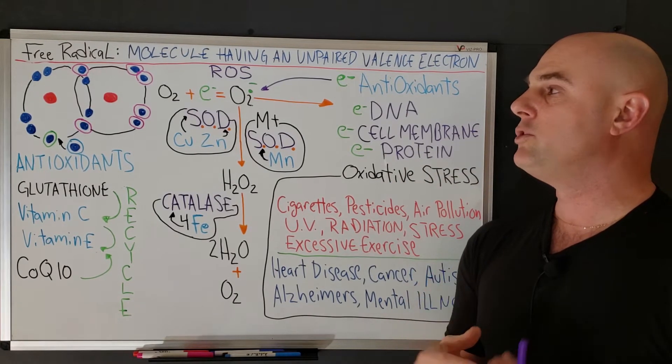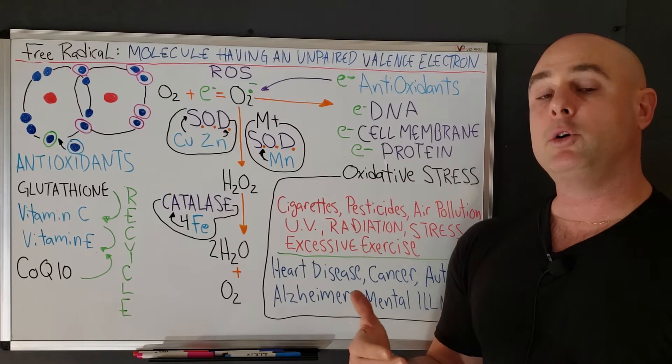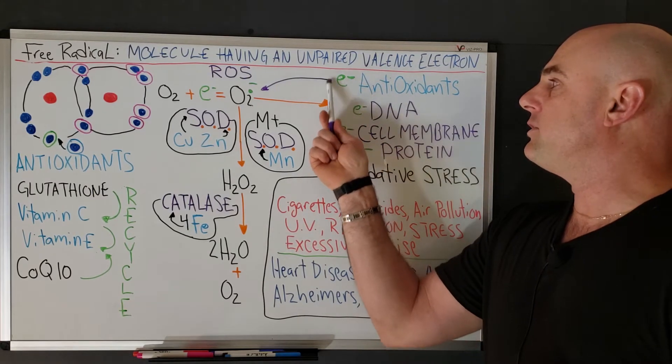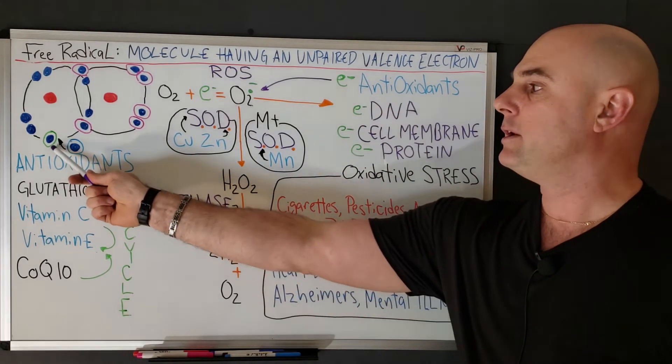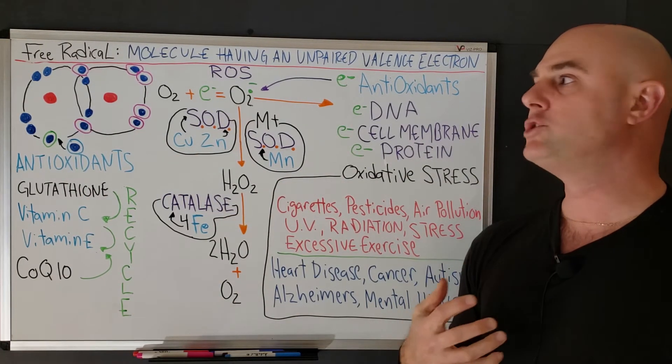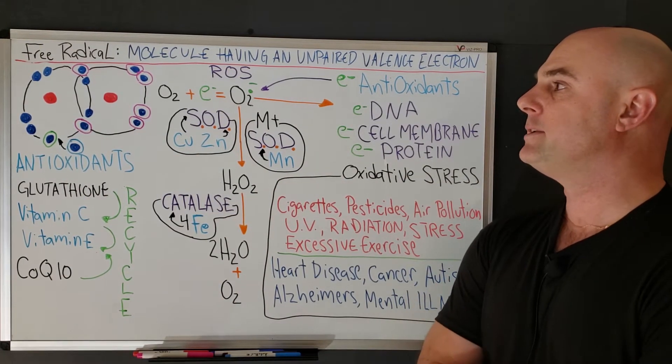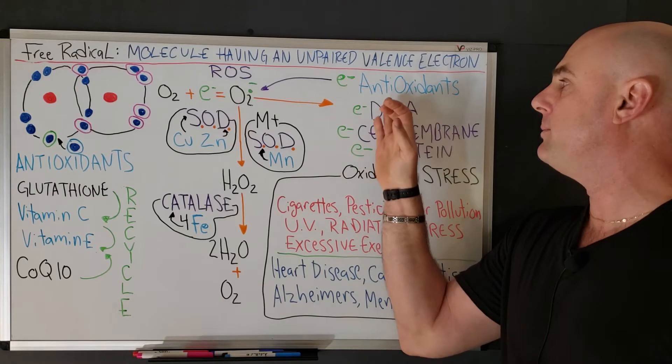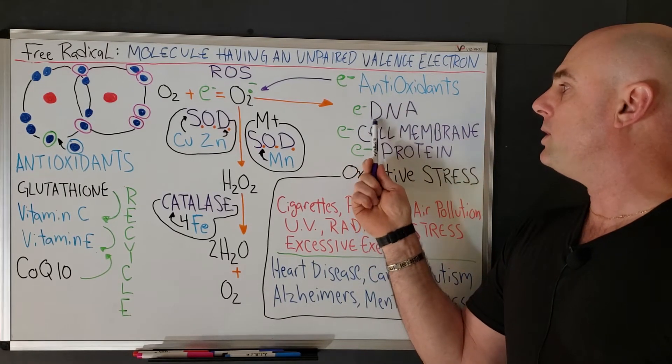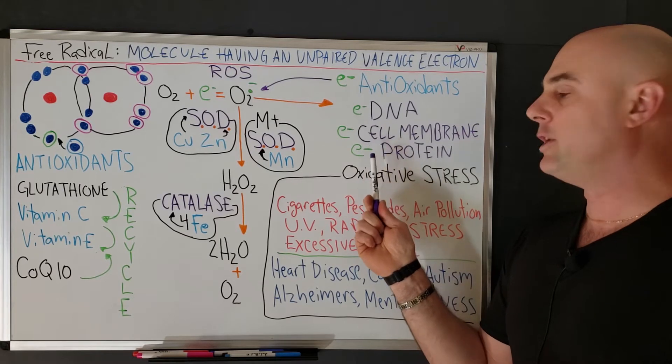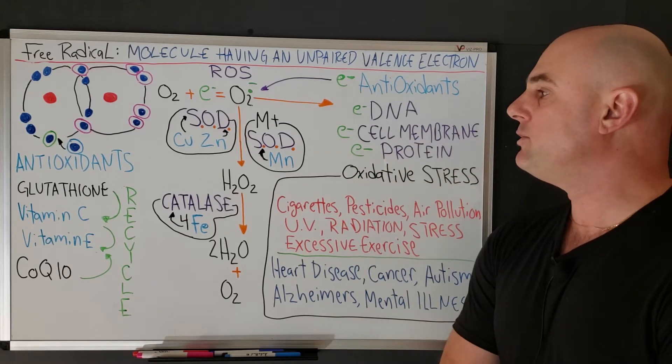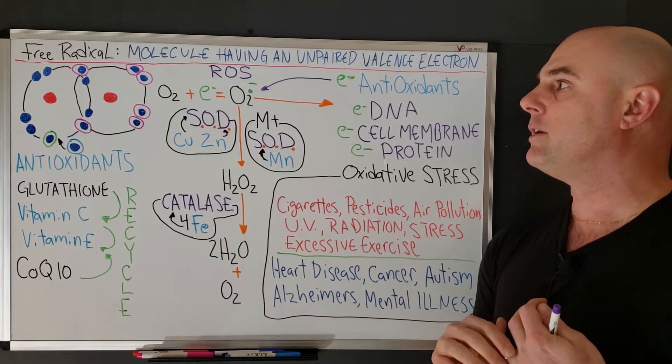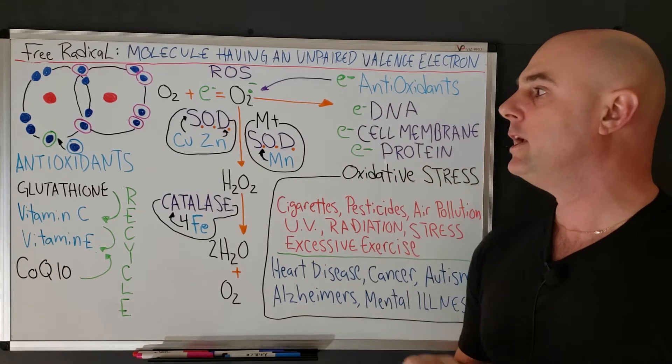For us to safely remove free radicals and neutralize them, we can use antioxidants. Antioxidants can safely add an electron to this sole electron here, neutralizing the damaging potential of free radicals. If we don't have any electrons to donate from these antioxidants, these free radicals will try to pull electrons from our DNA, our cell membrane, and our proteins.